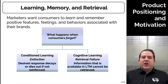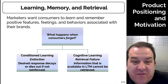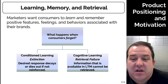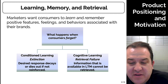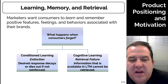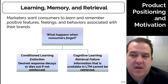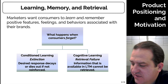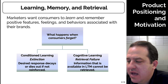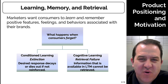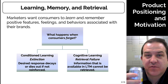As marketers, we want consumers to learn and remember the positive features, feelings, and behaviors associated with our brands. If someone forgets about us, we could have retrieval failure — information in LTM that cannot be retrieved — or extinction, where the desired response decays and gets forgotten. I go through waves with Fresca; I was drinking root beer and Sprite for a while, forgot about Fresca, and then came back to it. It's really easy to have consumers forget about you for unintentional reasons.